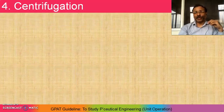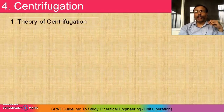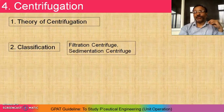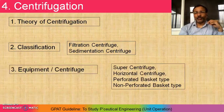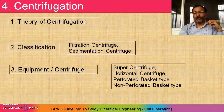Fourth chapter is centrifugation. The most important thing is the theory of centrifugation — you have to focus on exactly what it means. Then, classification: filtration centrifuge and sedimentation centrifuge. This classification plays an important role while studying centrifuge instruments. Equipment includes the centrifuge, super centrifuge, horizontal centrifuge, perforated basket type centrifuge, and non-perforated basket type centrifuge. Check out the principle of each and its application.